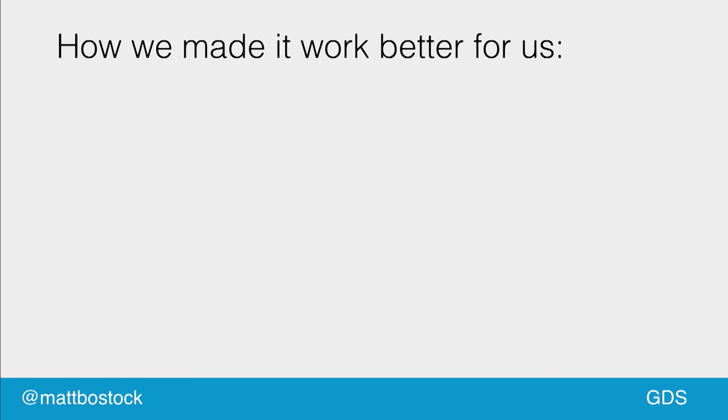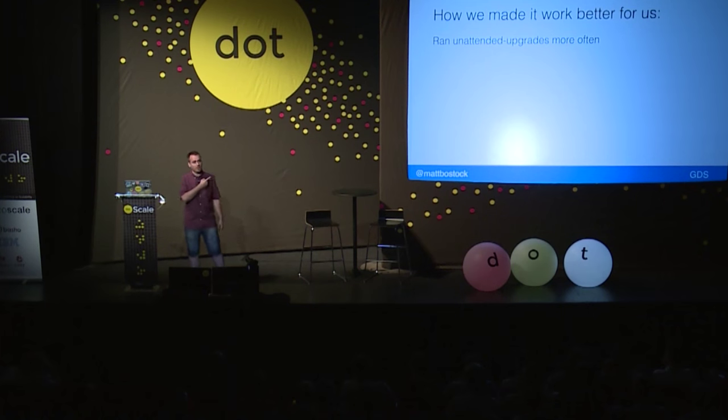That worked great, but that's not the end of the story. How did we make it work better? We noticed that unattended upgrades would run at around half past five in the morning. But that's not ideal — if a package is available at midnight, we only upgrade at half five, and we can only reboot a small number of servers before having to wait until the next day, or reboot manually, which we're trying to avoid. So we solved this by running unattended upgrades from midnight every half hour, to maximize our use of the reboot window.